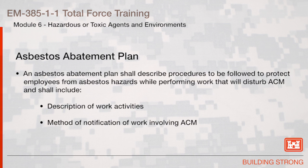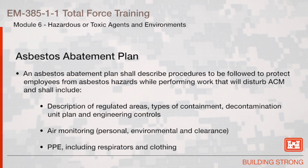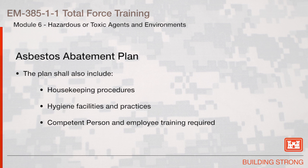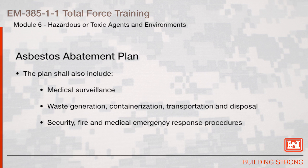An asbestos abatement plan shall describe procedures to be followed to protect employees from asbestos hazards while performing work that will disturb ACM and shall include description of work activities, method of notification of work involving ACM, description of regulated areas, types of containment, decontamination unit plan and engineering controls, air monitoring including personal, environmental, and clearance, and PPE including respirators and clothing. The plan shall also include housekeeping procedures, hygiene facilities and practices, competent person and employee training required, medical surveillance, waste generation, containerization, transportation, and disposal, and security, fire, and medical emergency response procedures.